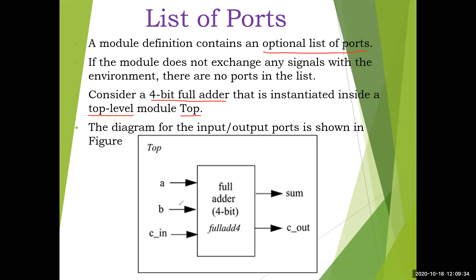Look at the diagram of the full adder. You have two inputs A and B, and C_in will be the carry from the previous addition. For example, if you have numbers like 1100 and 0101, in the first addition there is no carry so C_in is 0. In the next addition, if there is any carry it will be saved in C_in. The final answer is stored in sum and the last carry in C_out.